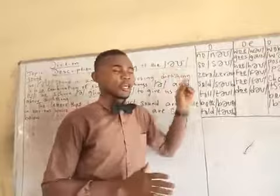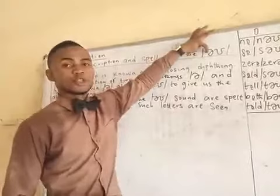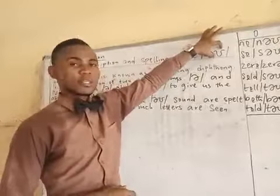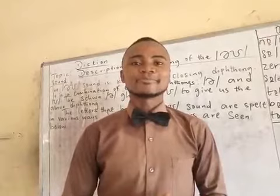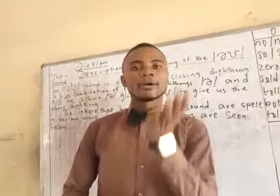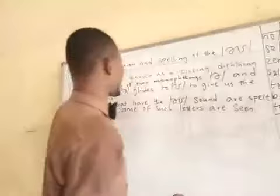This particular sound is known as a closing diphthong. It's a closing diphthong in the sense that the schwa glides to a closed vowel, giving us the diphthong: oh. Watch my mouth — oh. You discover that my jaw moves up a bit. Always remember that a diphthong is derived from two monophthongs — two sounds pronounced as one.